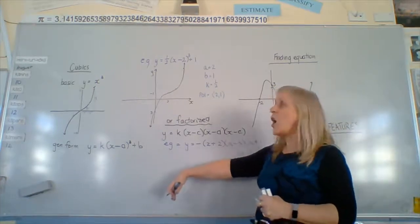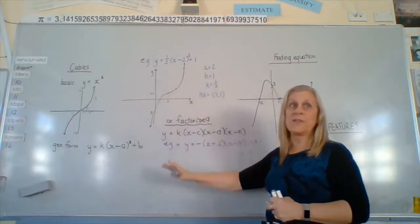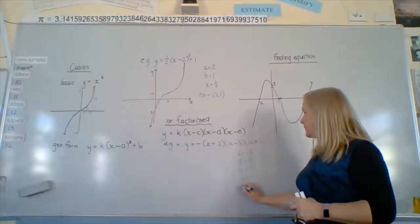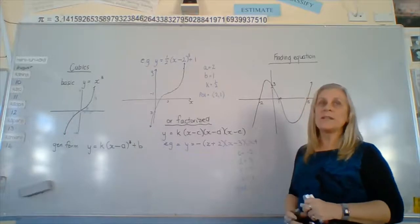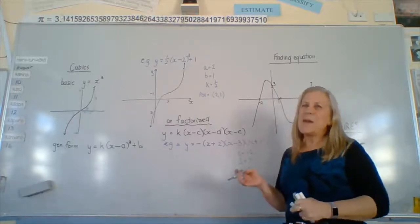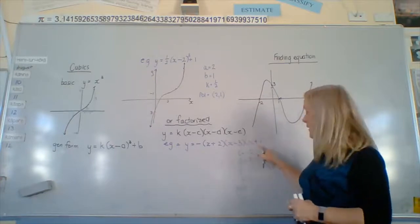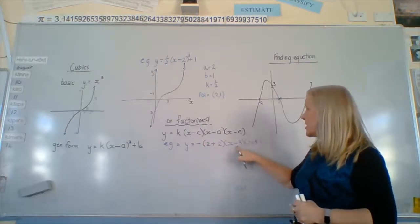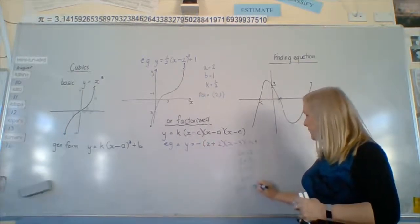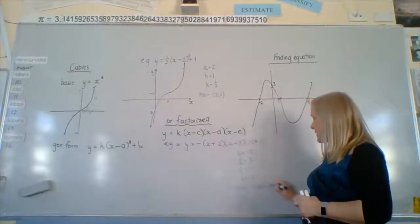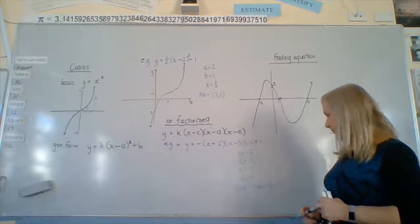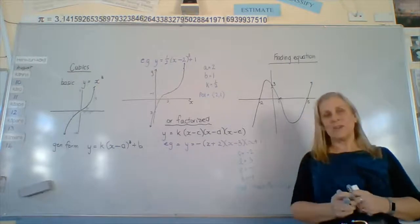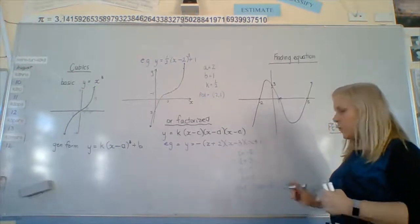That means that this graph, instead of starting down here, I already know it's going to start from up here and go this way. So when we were doing parabola, we found the y-intercept by multiplying these numbers. What we really should have been doing is multiplying these numbers. So negative 1 times 2 times negative 3 times 1. What does that give us? 6. Good. So 6 is our y-intercept.